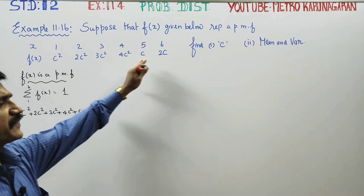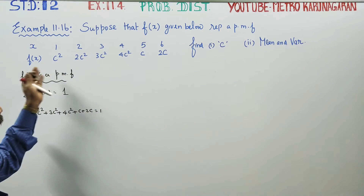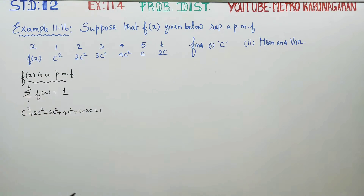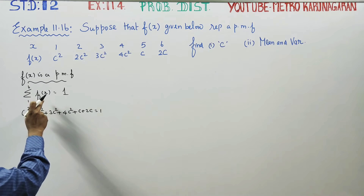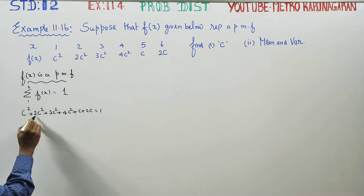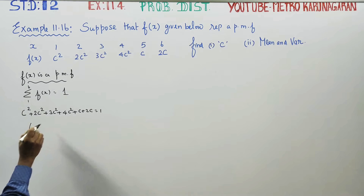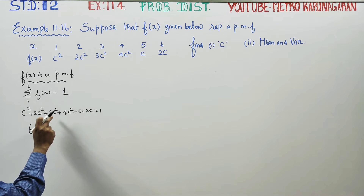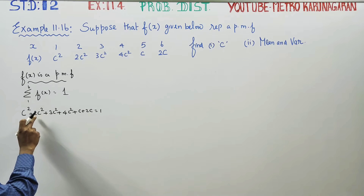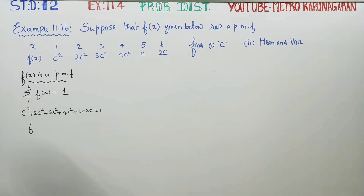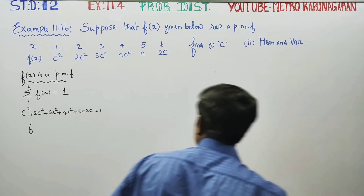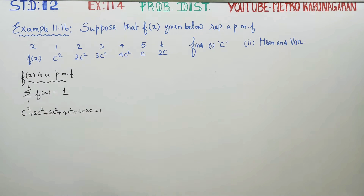f(x) is a probability, and sigma pi equals sigma f(x), so the total answer is 1. That is: c² + 2c² + 3c² + 4c² + c + 2c = 1. Adding the c² terms: 1+2+3+4 = 10, giving 10c².